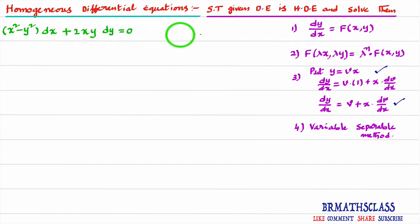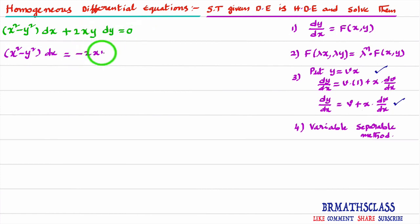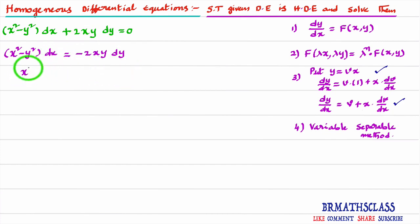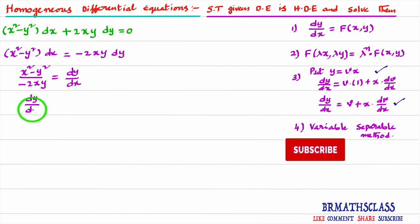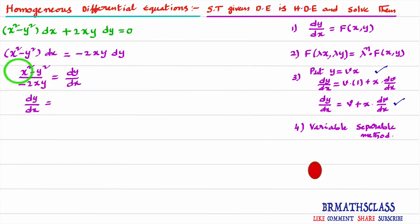I'll write the given differential equation in the form dy/dx = f(x, y). We have (x² − y²)dx = −2xy dy. Taking dx to the other side, we get dy/dx = (x² − y²) / (−2xy). Multiplying numerator and denominator by minus, the numerator becomes y² − x², giving dy/dx = (y² − x²) / (2xy).